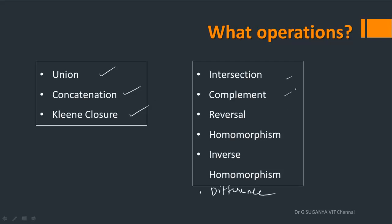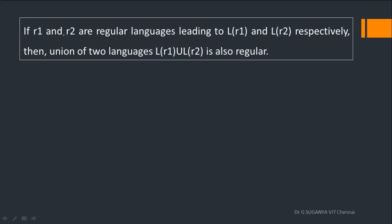For any set operation, we may be interested to know whether the application of these operations is closed or not. Already we have seen that if there exists a regular expression, there will exist a finite automata, and we have seen the equivalence between these two. Whether it is a regular expression, which is a mathematical representation, or a finite automata, which is a visual representation, it will end up in recognition of a regular language. So if a language is said to be regular, then there should exist a finite automata and a corresponding regular expression.